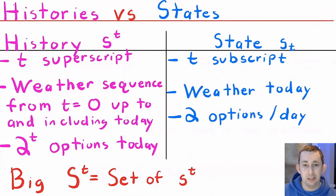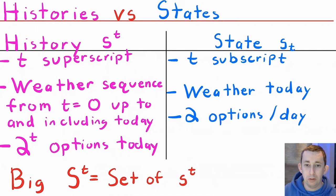Now that we've talked about the event history set, let's talk about event histories versus states of the world. So a history S superscript T is the weather sequence from T equals zero up to and including today. If we have two possible weathers, the number of event histories that we could have is just two to the T. So for example, we had three periods, so we had eight possible event histories. States of the world are little S subscript T, and that's just the weather today. So if we have two different weather options, sunny and snowy, we have two options on any given day. Big S superscript T is the set of all little S superscript T. The event history set is just the set of all possible event histories.